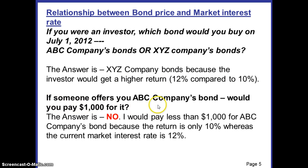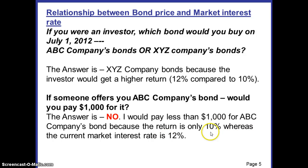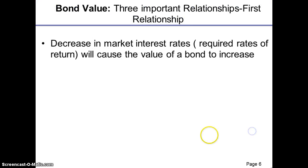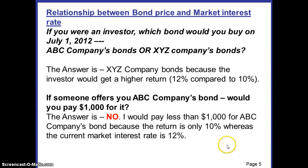If someone offers you ABC Company's bonds, would you pay $1,000 for it? The answer is no — you would pay less than $1,000 because the return is only 10% whereas the market interest rate is presently 12% in July. This means that when the market interest rate is higher than the coupon interest rate offered by a bond, you will only agree to buy such a bond if its price is less than the face value of the bond.